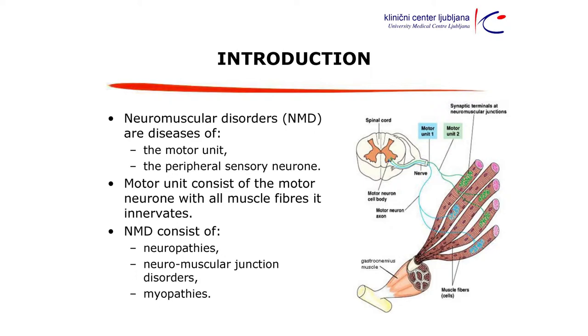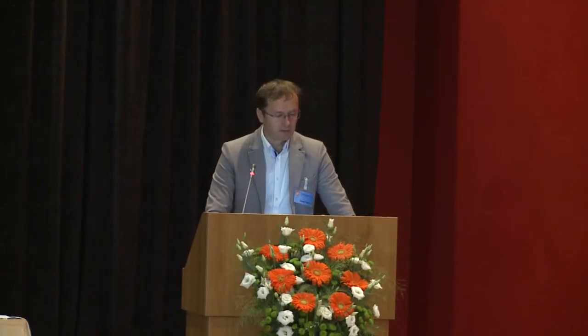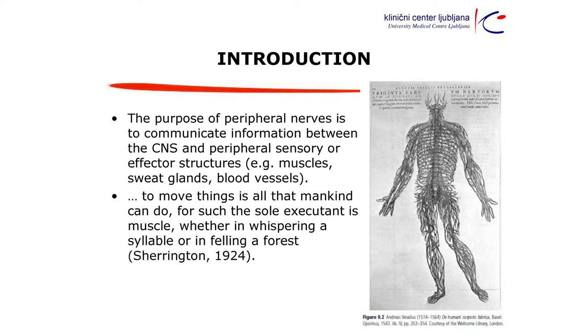Neuromuscular disorders consist of neuropathies and neuromuscular junction disorders. You've seen this picture before about the motor unit being a motor neuron with all the muscle fibers it innervates in that particular pathway. Peripheral neurons serve as communicators of information between the central nervous system and the effector organs.